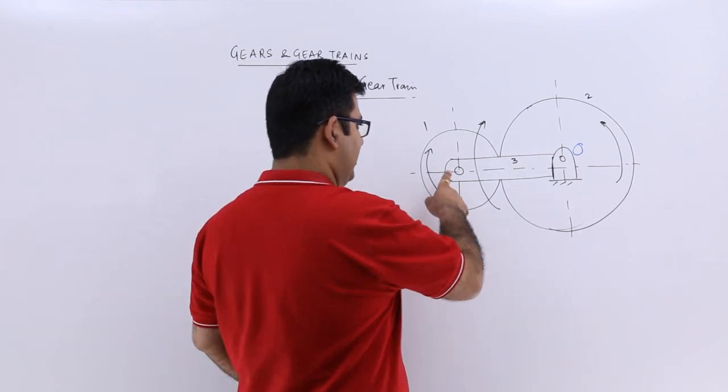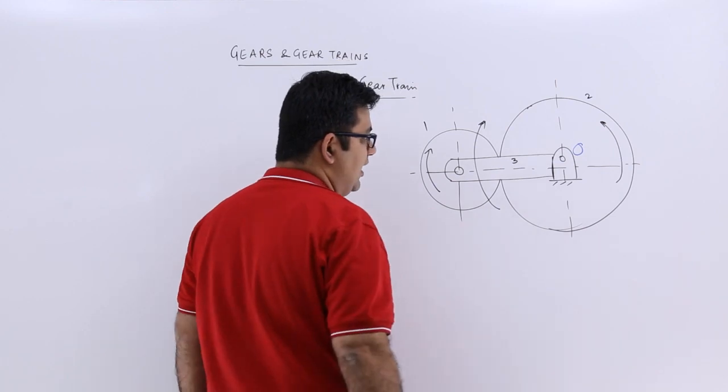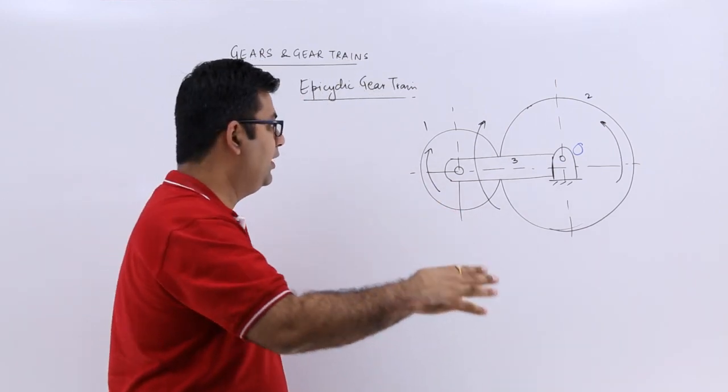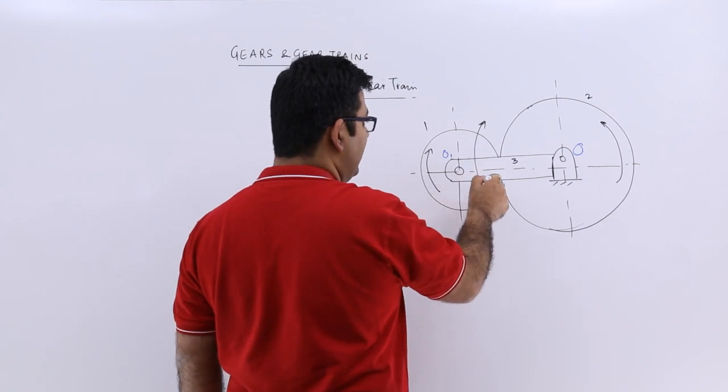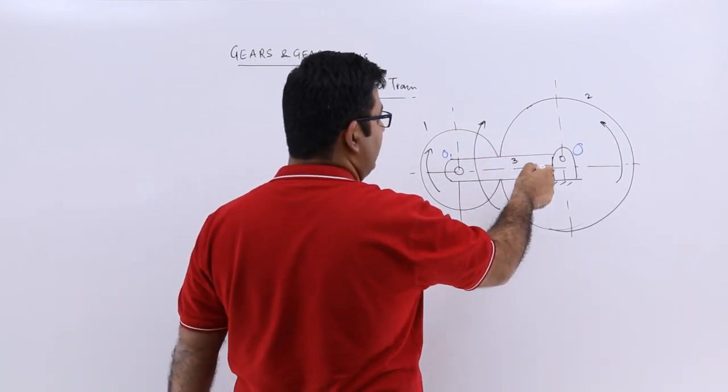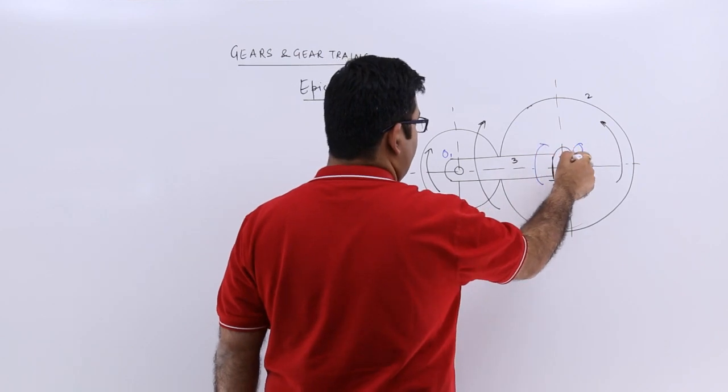Whereas, for this arm 3, one end of this arm is fixed at the center O and the other is at the center O1. This center O1 can move about because this arm can also rotate about this point O.